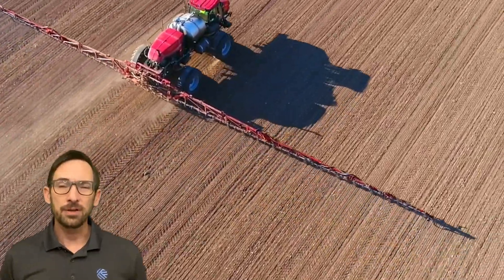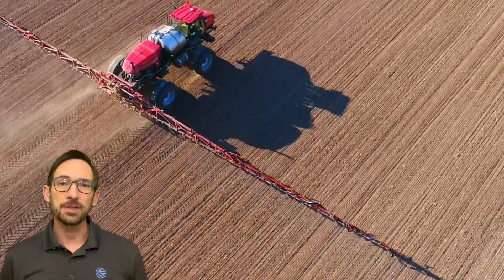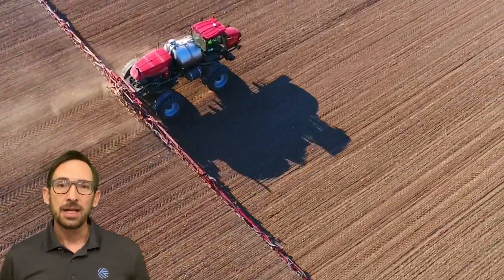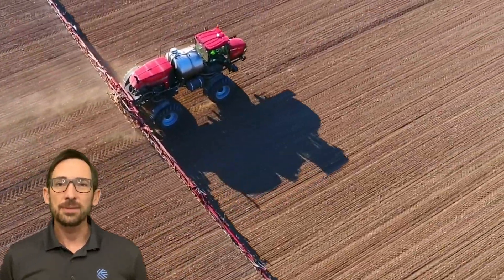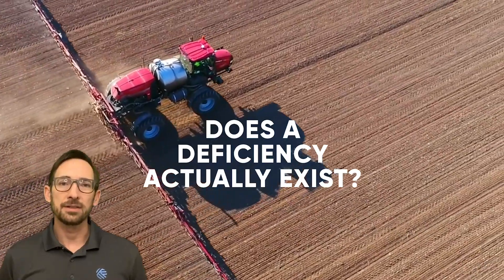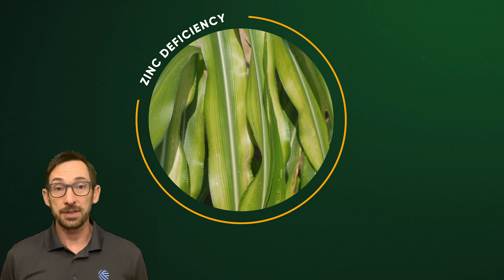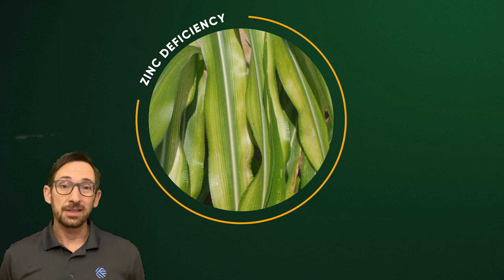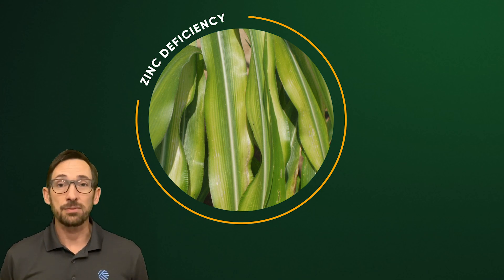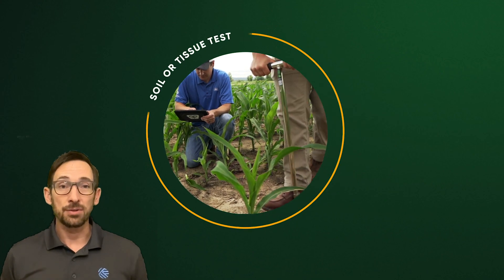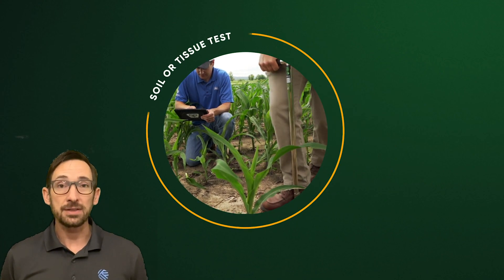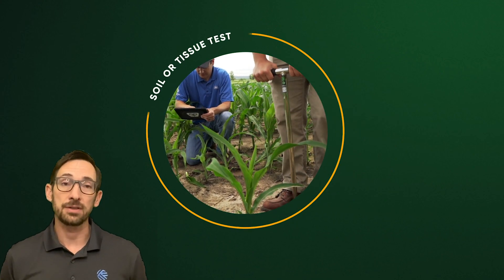Now before going out and spending a bunch of money on micronutrient products, it's important to determine whether or not a deficiency actually exists. Visual symptoms, such as yellowing or striping of the leaves, can indicate a micronutrient deficiency, but they can indicate other things as well. So it's important to use a soil or tissue test to confirm the cause of the problem.